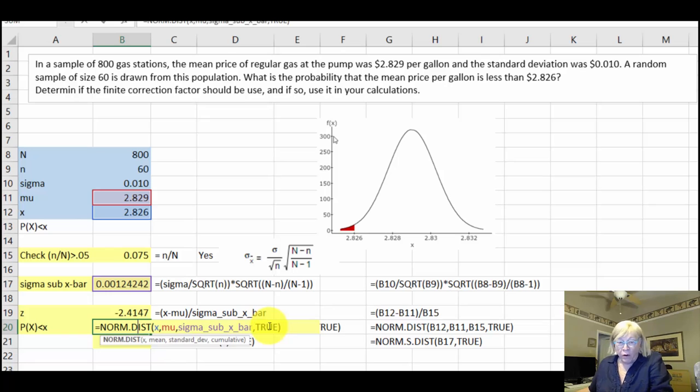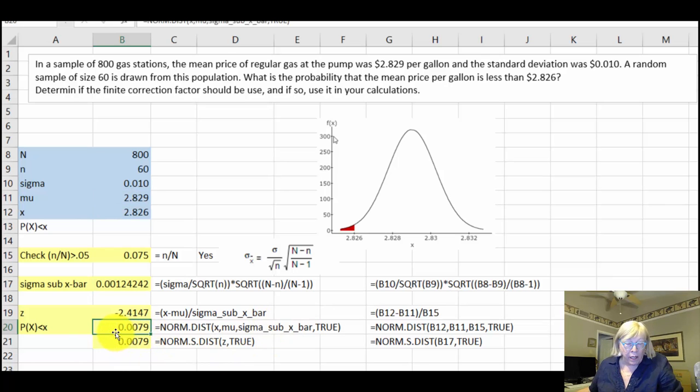That gives us a probability of 0.0079, which is pretty small. I also calculated it using our z-value—it just uses a different Excel function. If you know the z, use the NORM.S.DIST function and again set that to be true because we want the cumulative, everything from the left infinity to the right. So that's how you solve a problem: checking to see if you need to use the finite correction factor, then actually adjusting sigma (your standard error) for that FCF, and then solving for a probability the traditional way. Hope this helps.